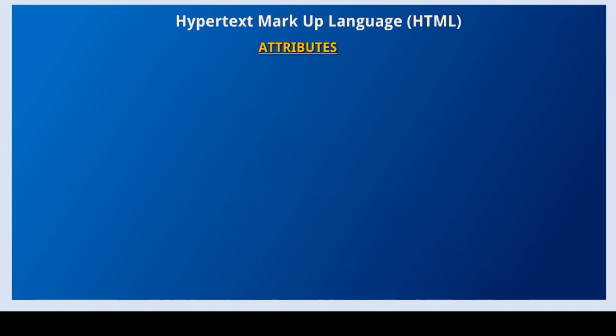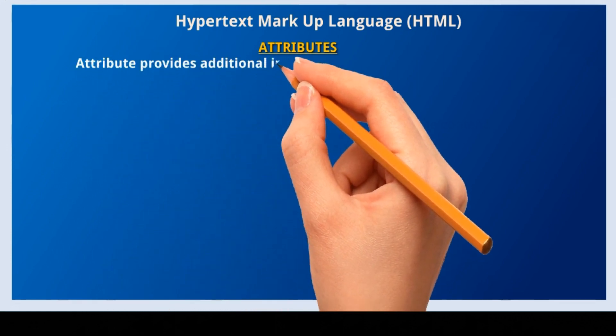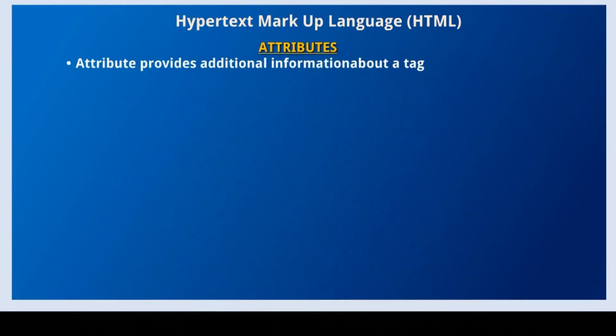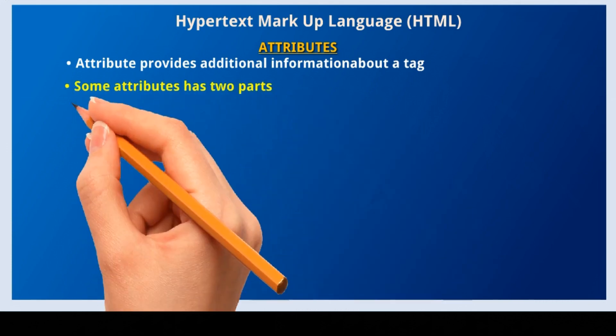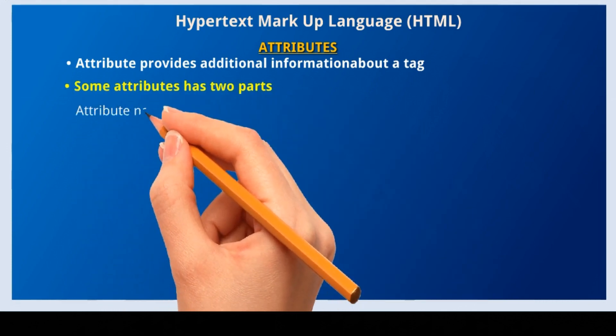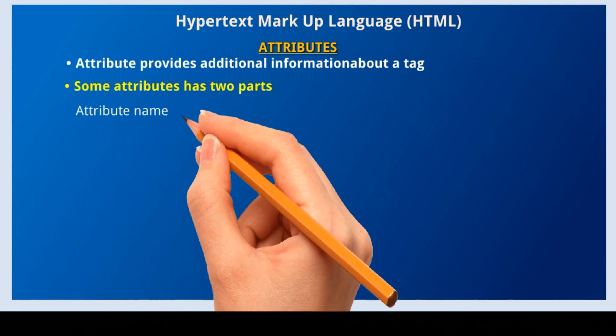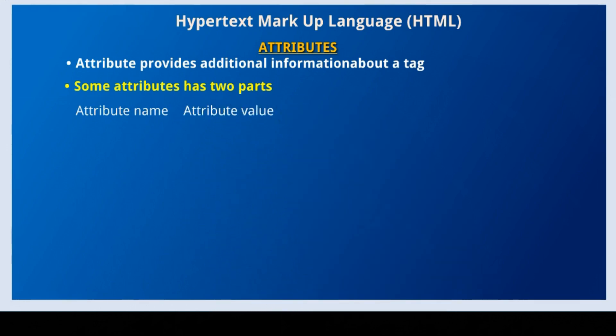Next component is attribute. Attributes provide additional information about a tag. An attribute has two parts: attribute name and attribute value. To connect the attribute name and its value, we use the equal to symbol. That is, attribute name equals attribute value.